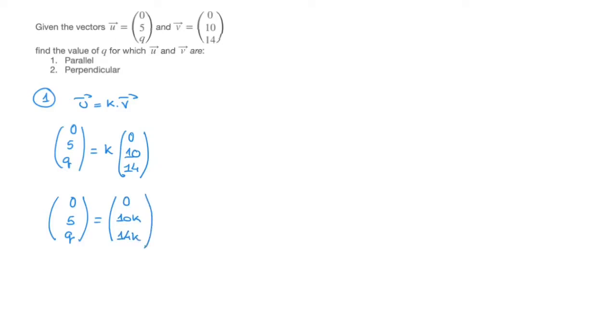And at this stage, we have two unknowns. Indeed, we don't know what k is yet, or perhaps you've already guessed it, and we don't know what q is. But an important result we can use here is the fact that two vectors are equal if and only if each of their corresponding components are equal. In other words, for these two vectors to be equal, we have to have 0 equals to 0, and we have to have 5 equals to 10k, and finally, we have to have q equals to 14k. So clearly, 0 equals to 0, so I'll just put a green tick there.